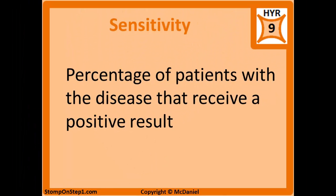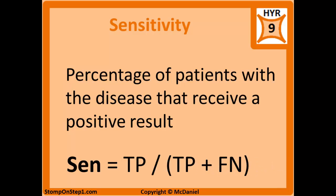The definition of sensitivity is the percentage of patients with the disease that receive a positive test result — in other words, the percentage chance that the test result will correctly identify a person who actually has the disease. The formula for sensitivity is true positives divided by true positives plus false negatives. Some people memorize it as true positives over the total number of people with disease, but the formula as written is a little easier to understand.